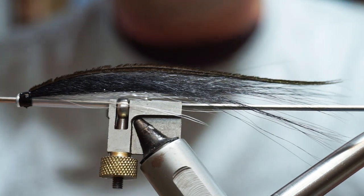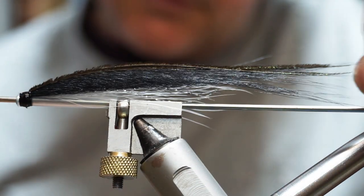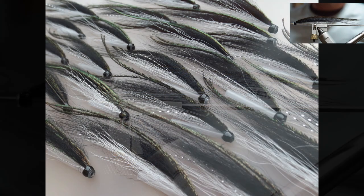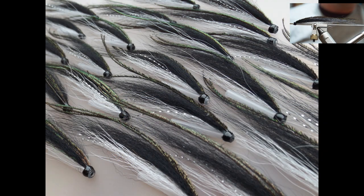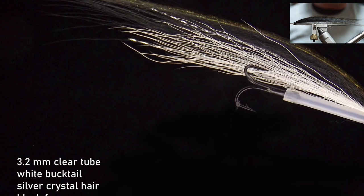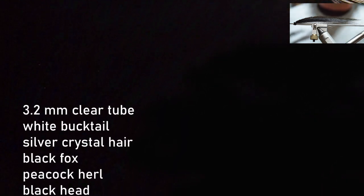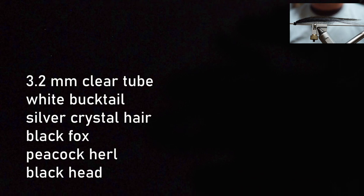So that is our simple sunray tied. Very effective fly. Hopefully you liked our video. If you did, give us a like, subscribe, check out all the other videos on the channel. And until next time, tight lines and thanks for watching.